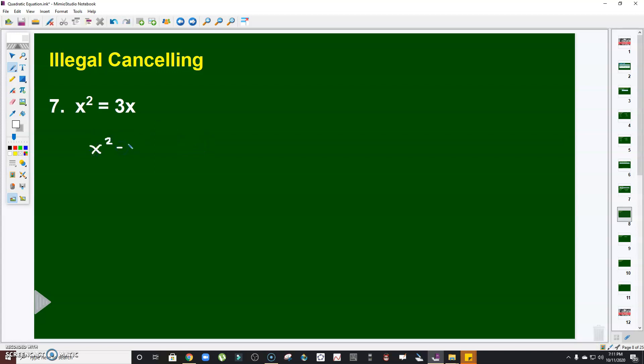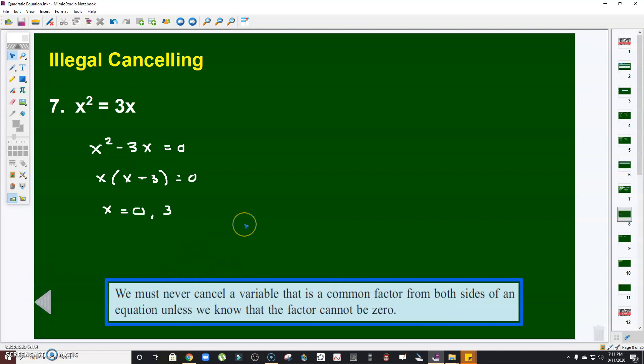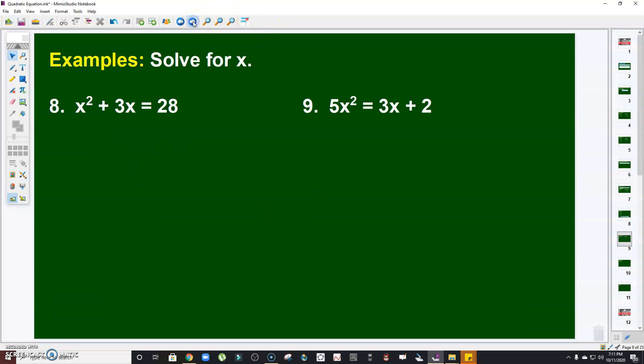So what's the proper method? Let's follow ZPP. x² - 3x, equate to zero, factor out x. So this will be the resulting equation, right? x(x - 3) = 0. And clearly, the values of x here are 0 and 3. Take note of this. We must never cancel a variable that is a common factor from both sides of an equation unless we know that the factor cannot be zero.